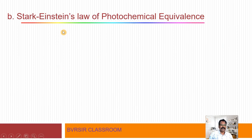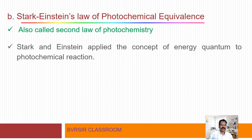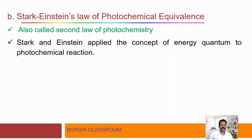The second one is Stark-Einstein's law of photochemical equivalence. This law is also called the second law of photochemistry — a very important law in photochemistry.